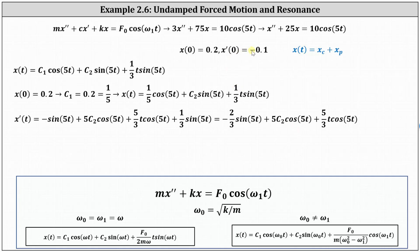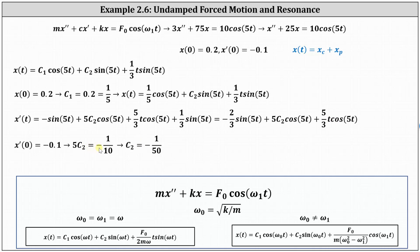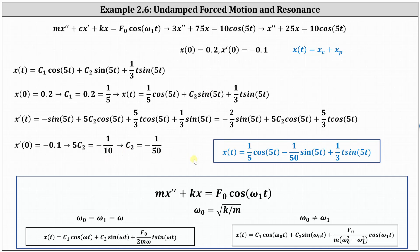We now use x'(0) = −0.1 to determine c₂. Substituting t = 0, the first term −(2/3) sin(0) = 0, then we have +5c₂ cos(0) = 5c₂, and the third term has a factor of t so it also equals zero. This gives 5c₂ = −0.1 = −1/10, so c₂ = −1/50. Substituting −1/50 for c₂ gives us the equation that models the motion of the mass.